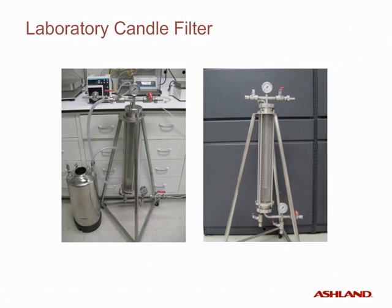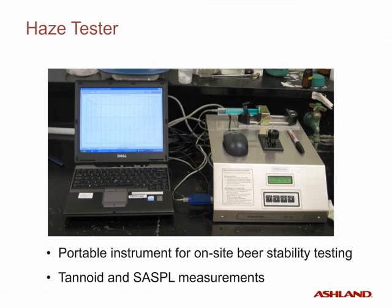Our laboratory candle filter is used in regeneration applications. We have used this system to assess improvements in the quality of our regeneration-grade Polyclar Super-R stabilizer. We have an additional portable instrument for on-site testing called the Haze Tester, which is similar to the tonometer instrument with the added benefit of portability. It is typically used to measure tanoid and SASPOL values, and these measurements can be assessed in real time at the brewery.